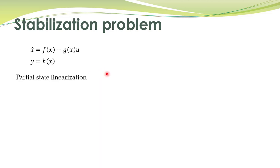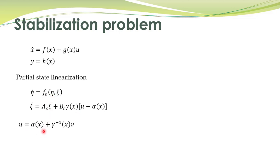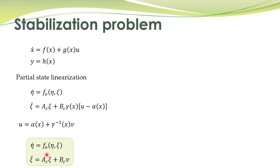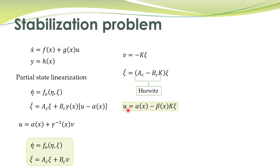The second case is when full state linearization is not possible. You can obtain partial state linearization: some states can be linearized and the remaining states are called internal dynamics. If we define this control law, the system is brought into a form with a linear part and a nonlinear expression corresponding to the internal dynamics. For the linearized part we can again use state feedback control, and K is found to make the closed-loop matrix Hurwitz.